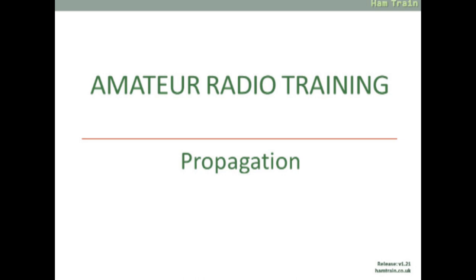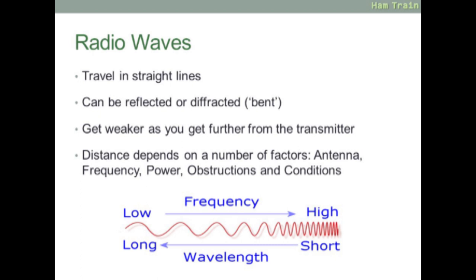Next, a quick look at propagation. Radio waves travel in straight lines. Waves can be reflected or diffracted—in other words, bent. Radio signals get weaker the further away you get from the transmitter. The distance you can get depends on a number of factors: the type of antenna you're using, the frequency you're transmitting on, the power, any obstructions between the transmitter and the receiver, and also the conditions. You should also remember that as the frequency increases, the wavelength decreases.